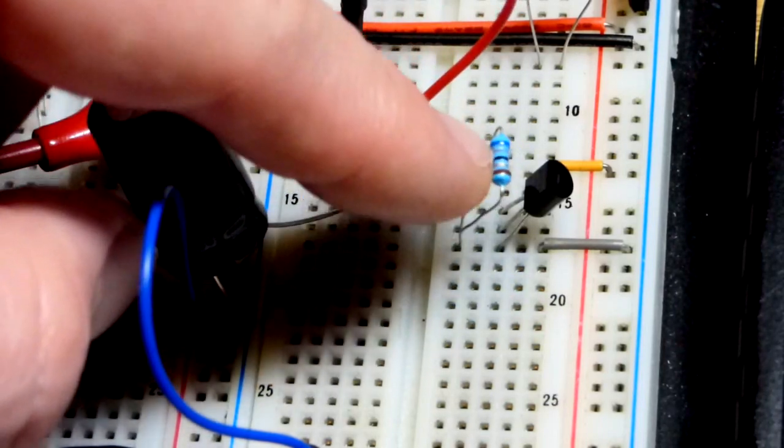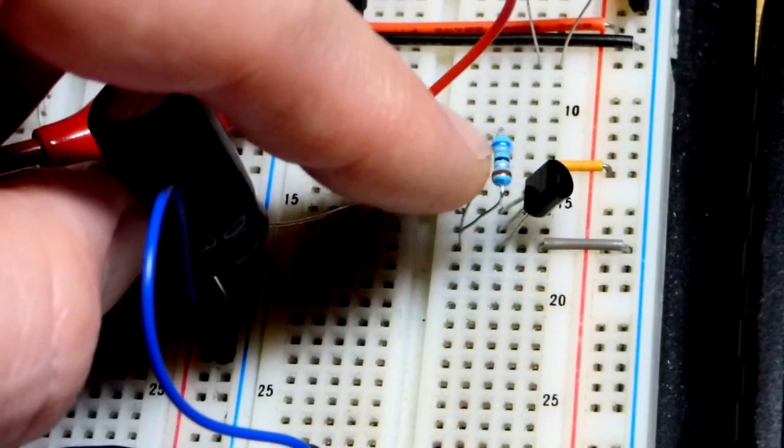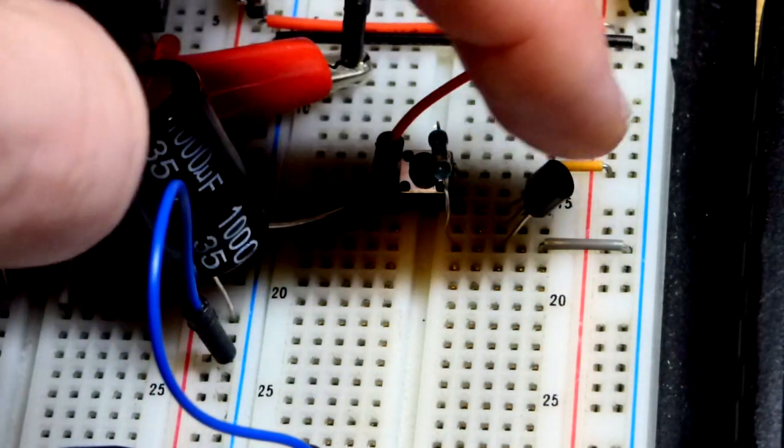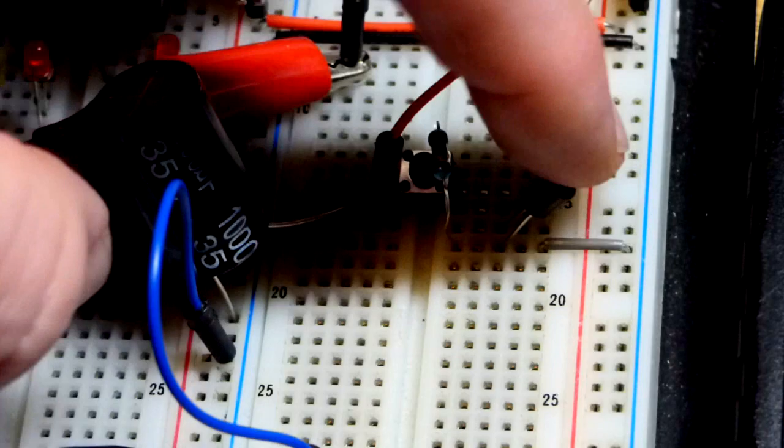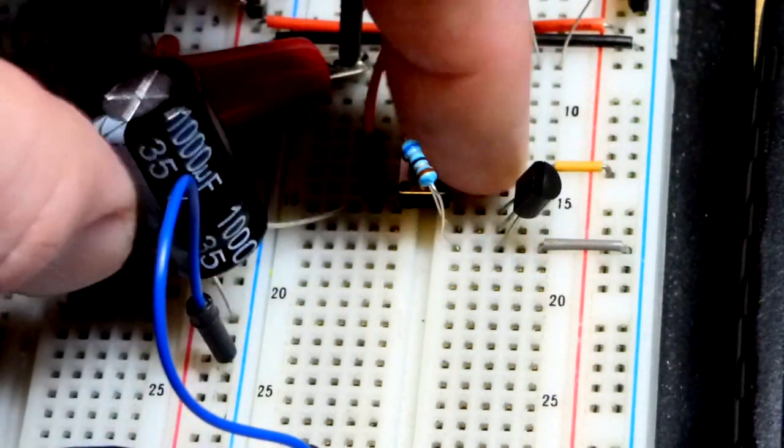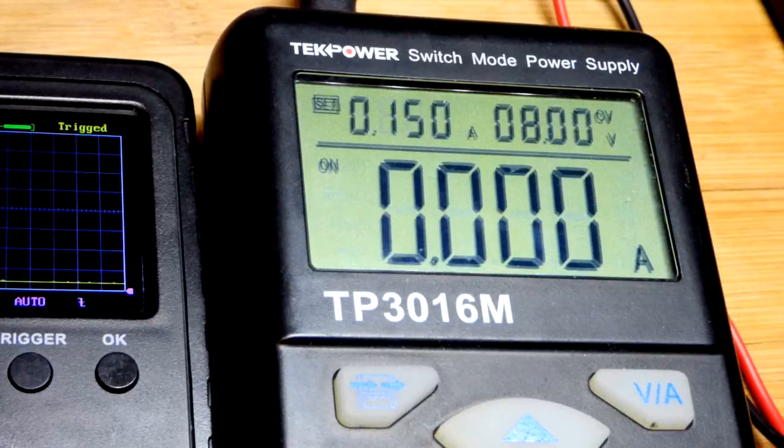So this is a 68 ohm resistor, which is what we need, a 68 or 64 ohm resistor with the LM334. It will give us one milliamp, and we have the positive supply up there to the top of the switch.